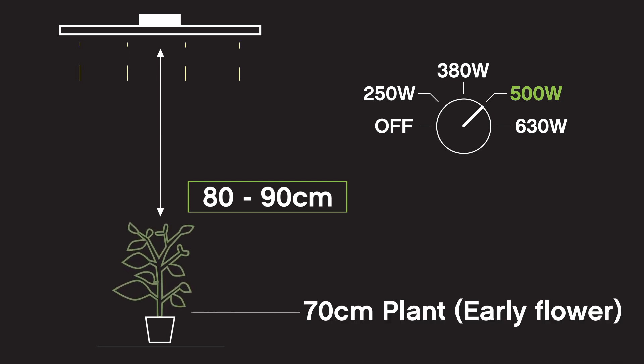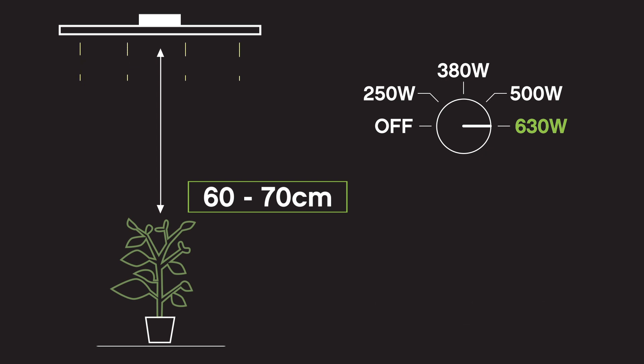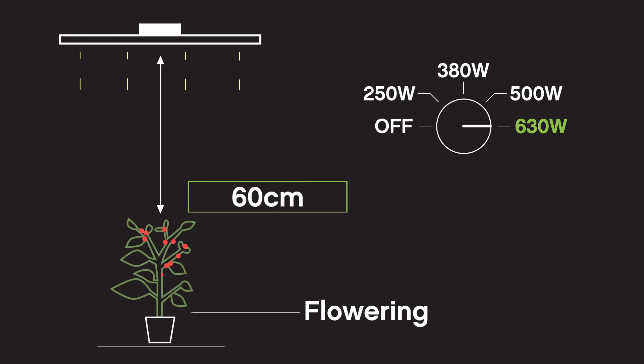Once your plants are in early flower, or roughly 70 centimeters tall, you can set the Sirius to its 630 watt maximum output, and gradually, in 10 centimeter increments, begin to lower the fixture down towards the plant canopy over a course of several days.